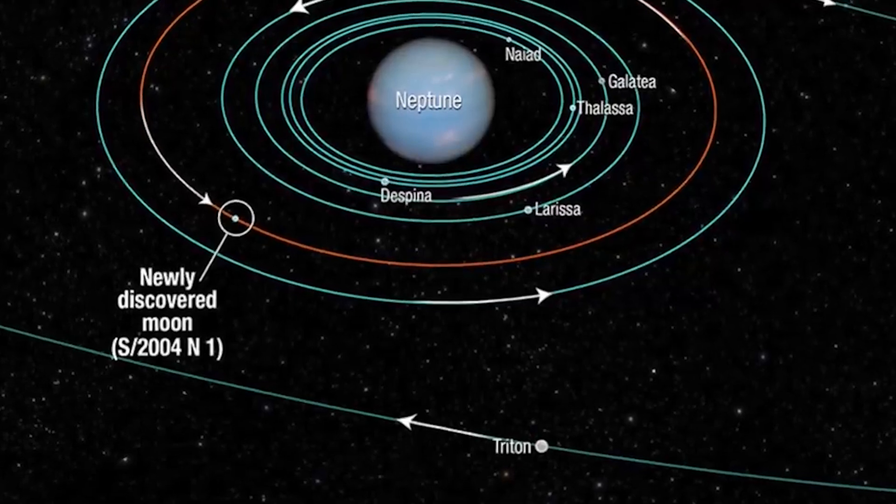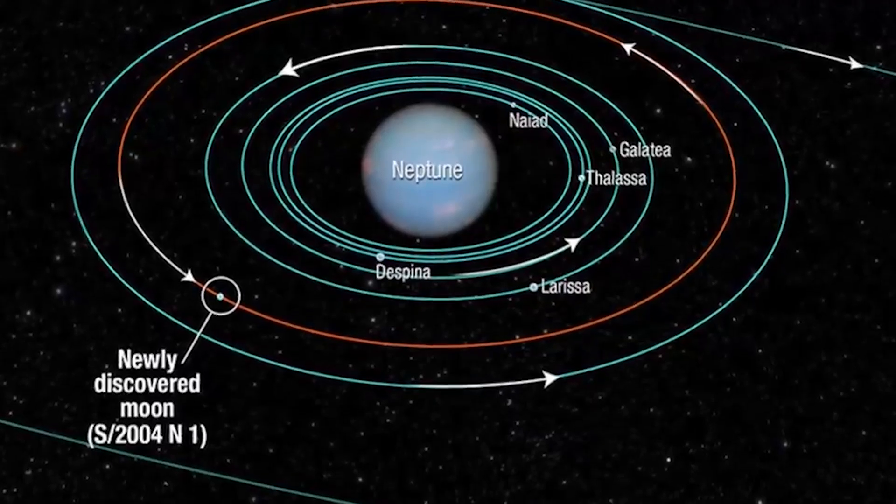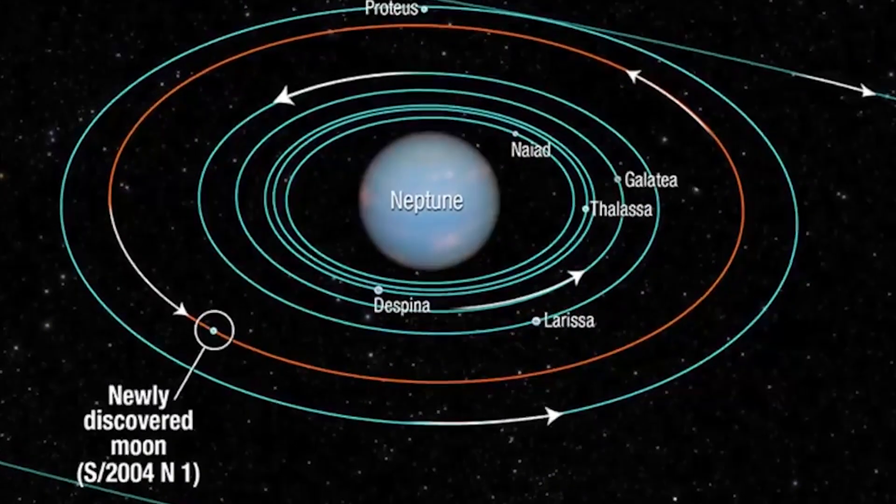For instance, Pluto is locked in a 2:3 resonance with Neptune, meaning that for every two orbits Pluto completes around the sun, Neptune completes three.